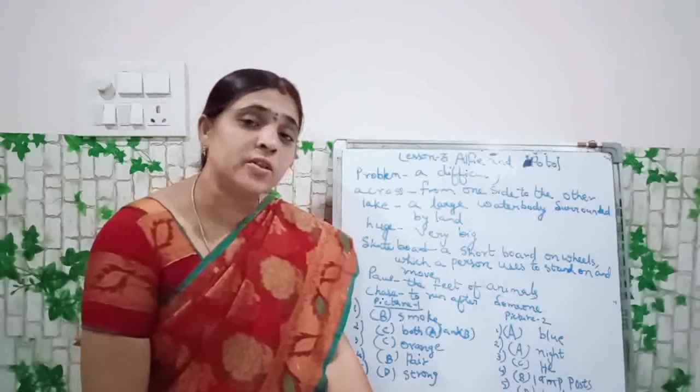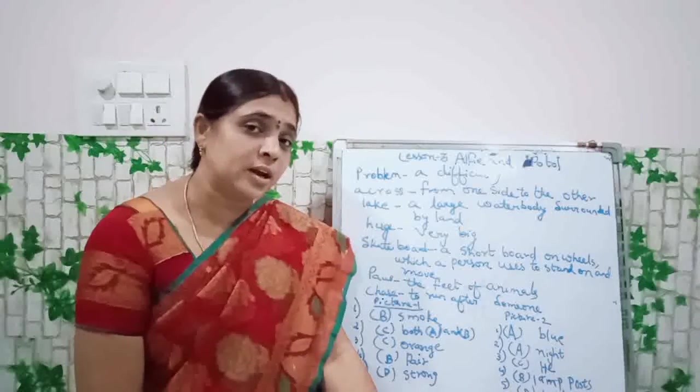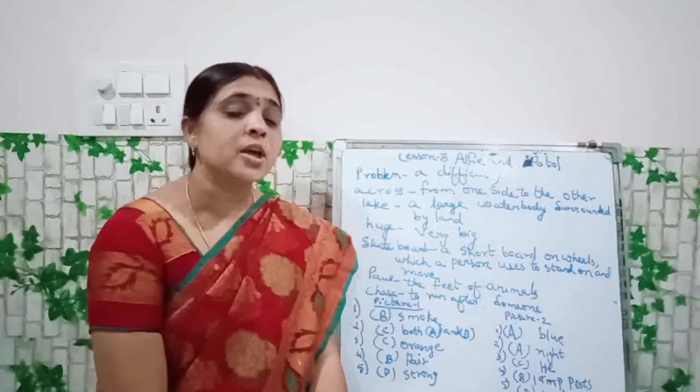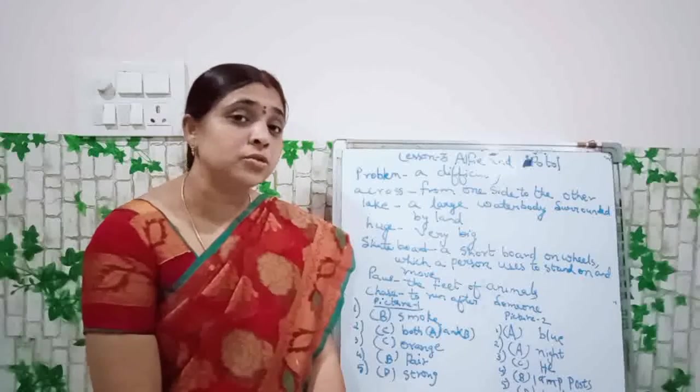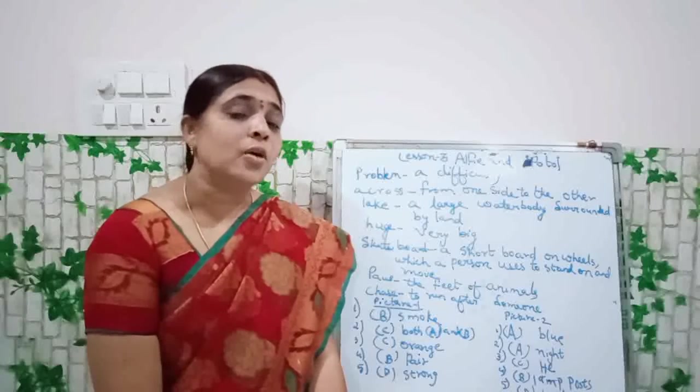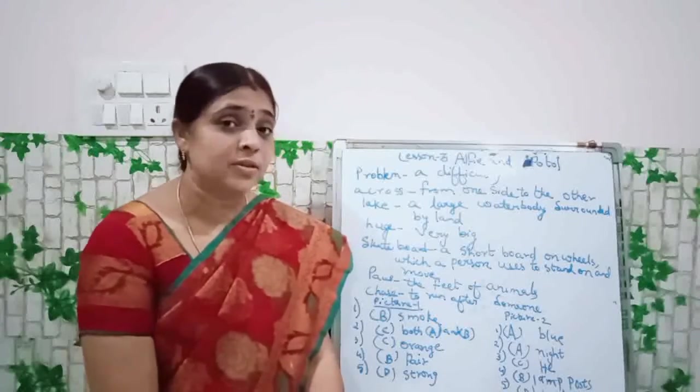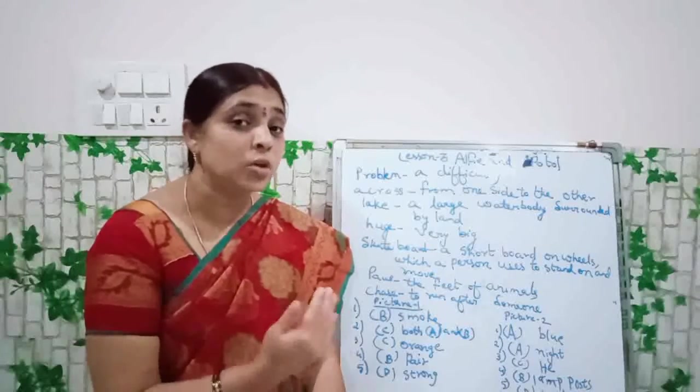Lesson number 3, what is the name of the lesson? Alfie and Portal. Did you remember anything about this lesson? Alfie and Portal are two dogs. They are good friends. And they both wanted to go and play in the forest. They want to run around the park and enjoy with all the animals. But here they have one problem.